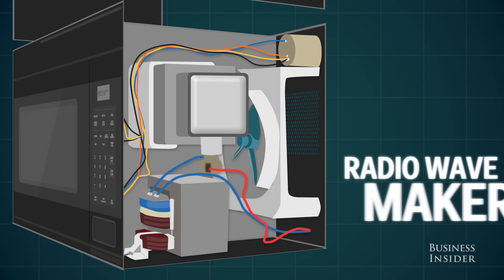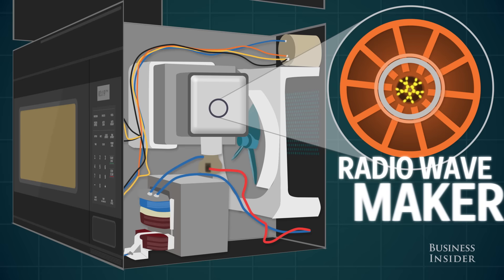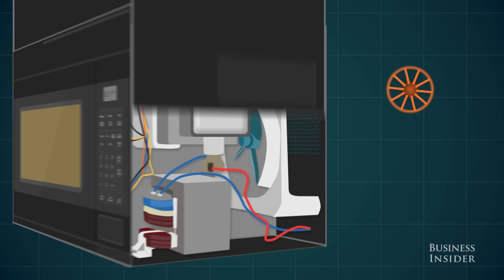Then the radio wave maker lets power fly around through the spaces inside it. This builds up a radio wave of a certain size, like how an empty bottle plays a certain note if you blow over the hole at the top.